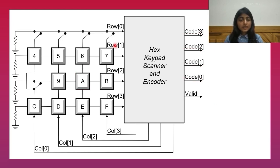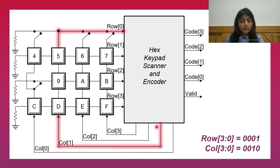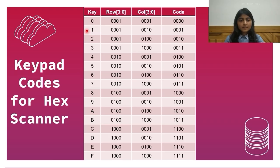This is the structure that will help us achieve the design requirements. Each row line is connected to ground with a pull-down resistor. When a switch is closed, a connection is established between the corresponding row and column line, and the row line attains the value held by the column line at that moment. For example, if the column 1 line is asserted and key 1 is pressed, the row 0 line will also become high. So the row vector becomes 0001 and the column vector becomes 0010. The machine encodes these row and column values according to an encoding table.